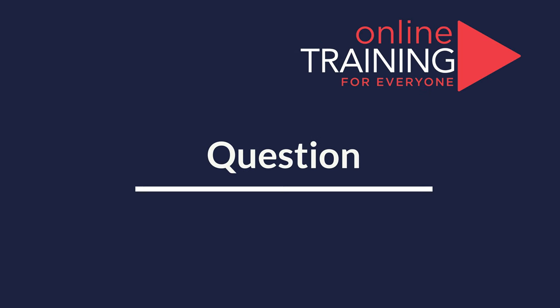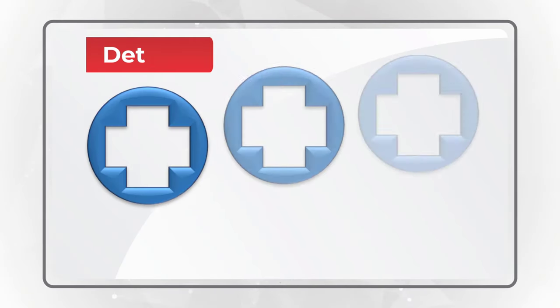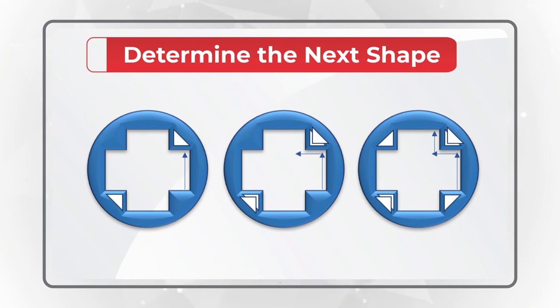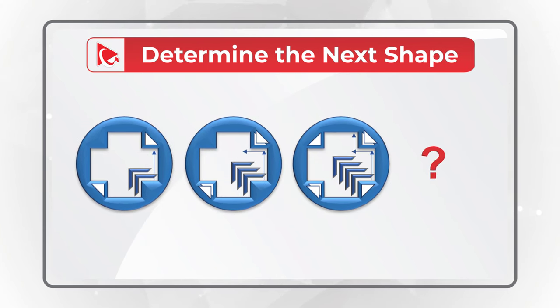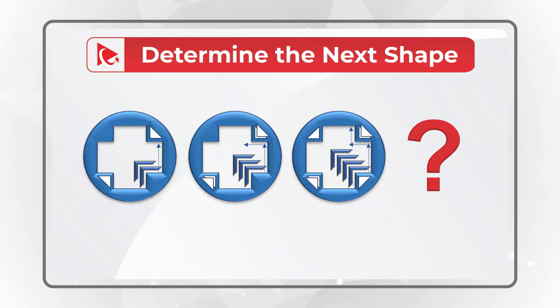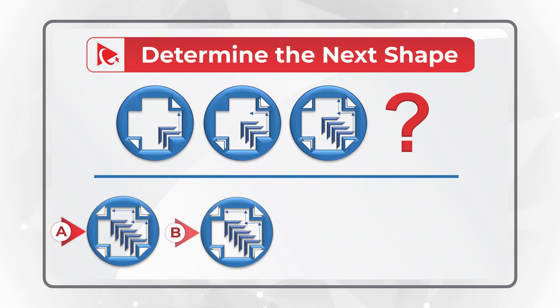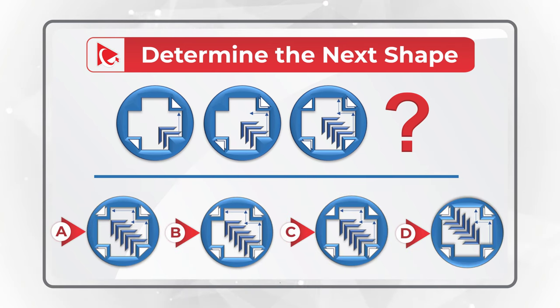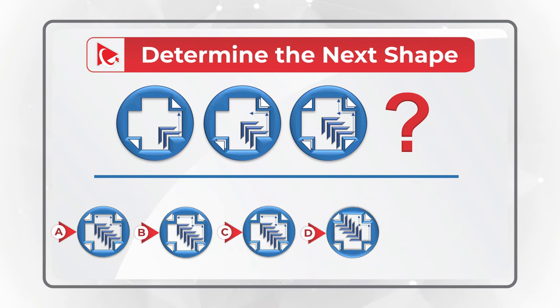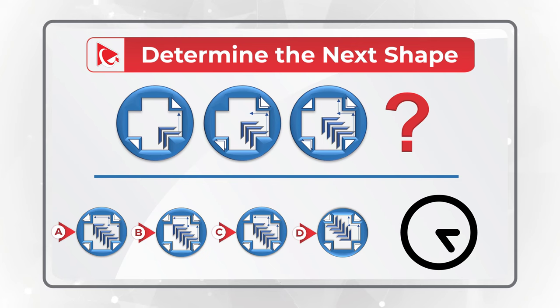Here's a question to test your skills — you're presented with a series of objects and need to determine the next object in the sequence. Choose from four choices: A, B, C, or D. Please post your version in the comments so I can give you my feedback. Thanks for participating and good luck.